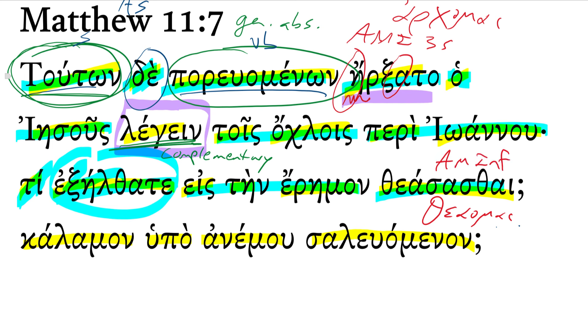And then there's a bit of an ellipsis here. Did you go out to see a reed - like a piece of tall grass - shaken? There's an attributive participle describing the reed. It's from the verb saleuo, to shake. I don't know if you know that verb or not, saleuo.